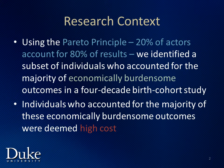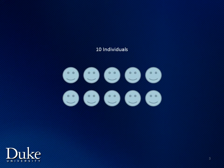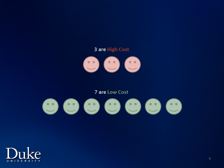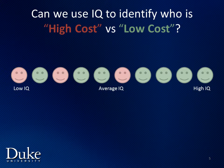I'll start with an example. Imagine we have ten individuals: three are high cost and seven are low cost. The question we'd like to answer is this: if we lined up our individuals in order of IQ, with low IQ individuals on the left and high IQ individuals on the right, can we use IQ to identify who is high cost and who is low cost?